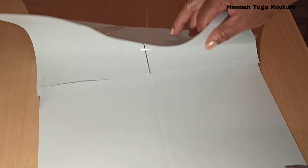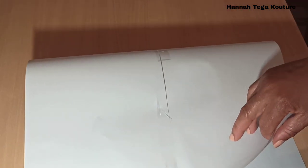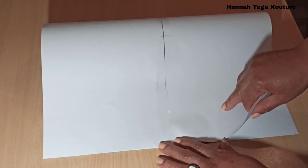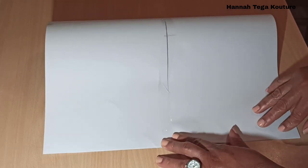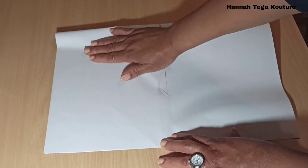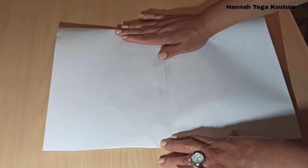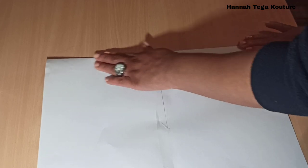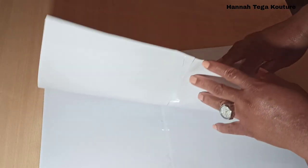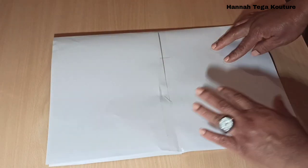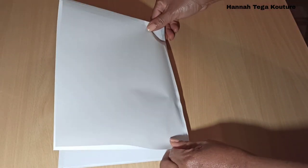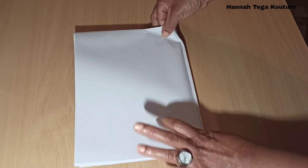For a floor-length circle skirt, you need about three meters of fabric. So what you need to do is fold your fabric over like this, then fold it over again, making it two times. You fold it over once, then you fold the other side once, making two times.